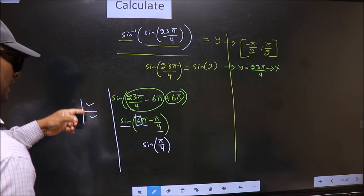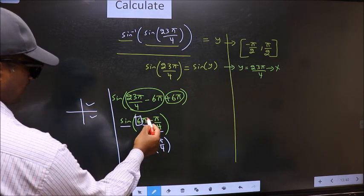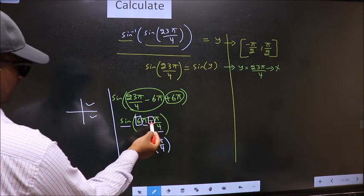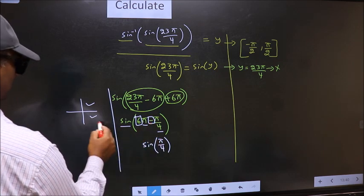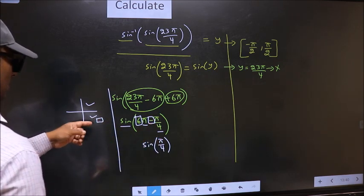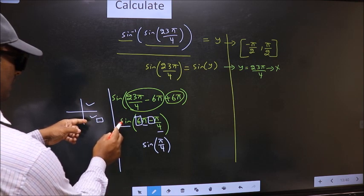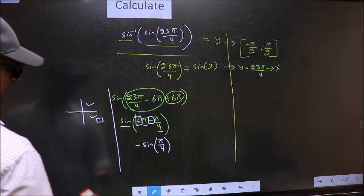So now to select the quadrant we should look at this symbol. Here we have negative that means the angle lies in the fourth quadrant. And in the fourth quadrant sin is negative. So put negative.